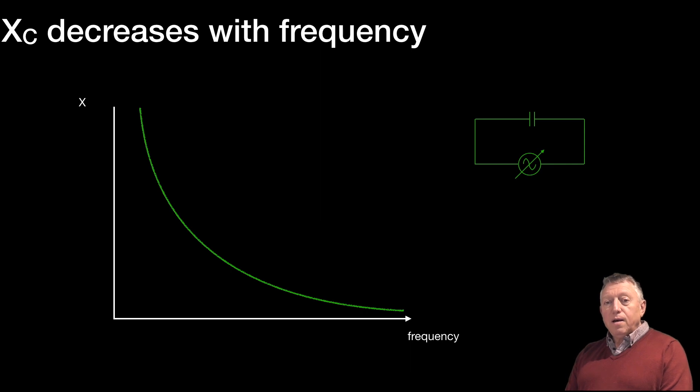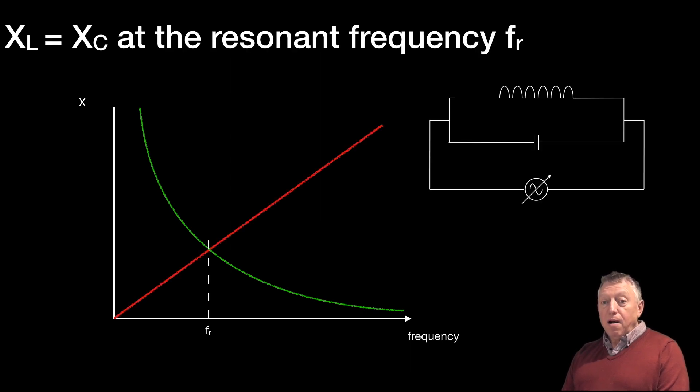We get resonance either in a parallel tuned circuit, or indeed a series tuned circuit, when XL, the inductive reactance, equals XC, the capacitive reactance. And that's shown here on the graph.